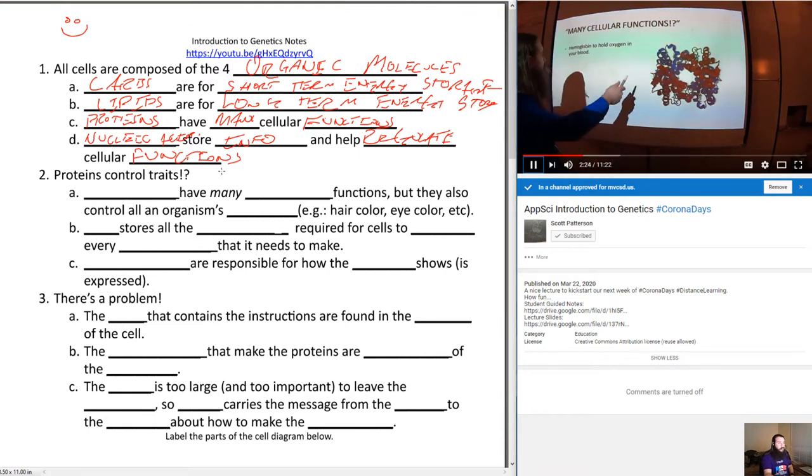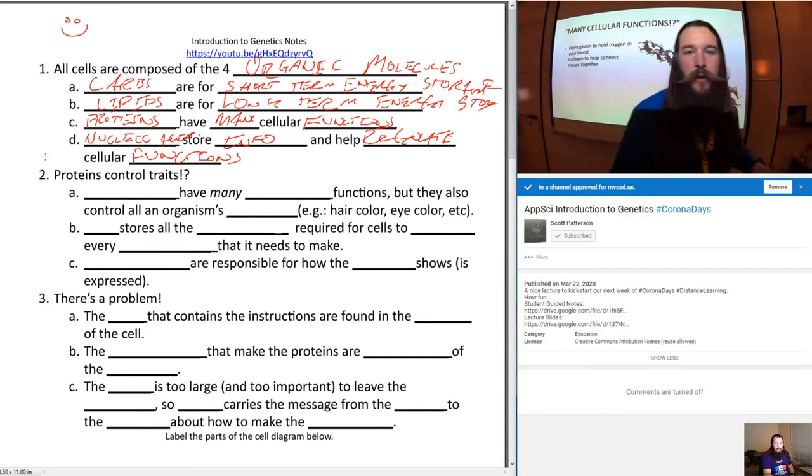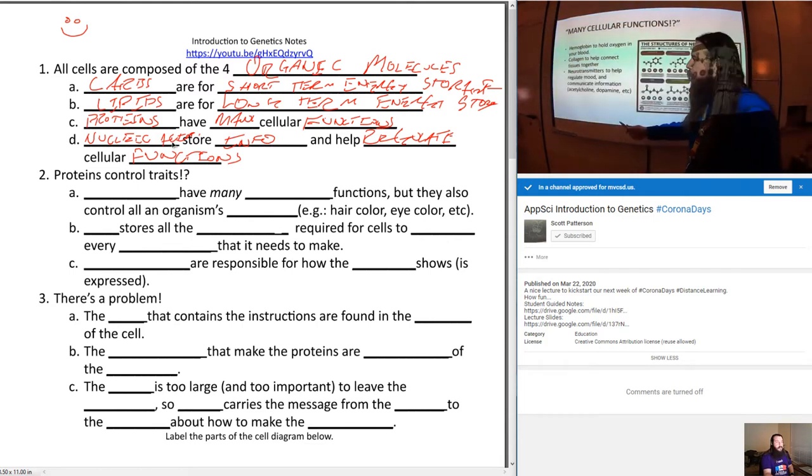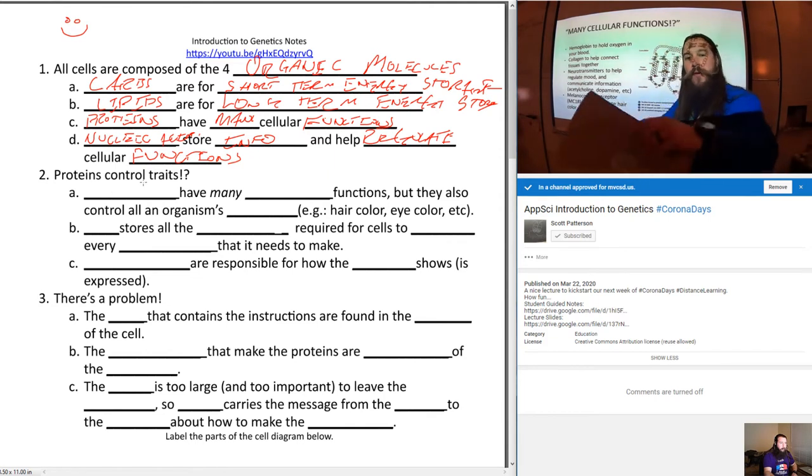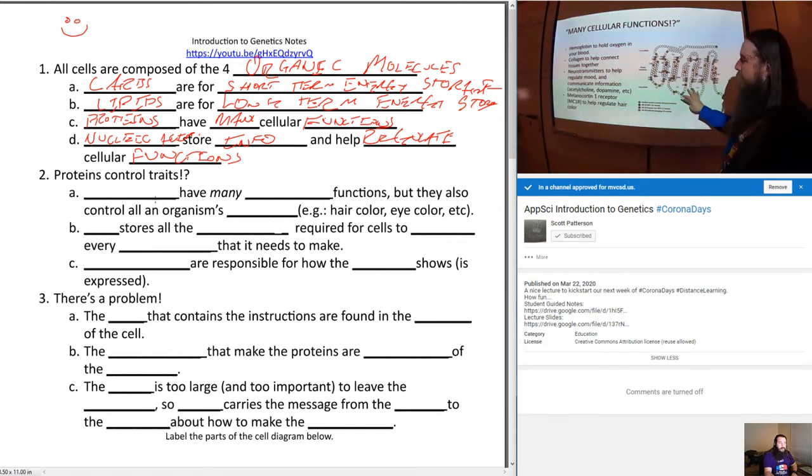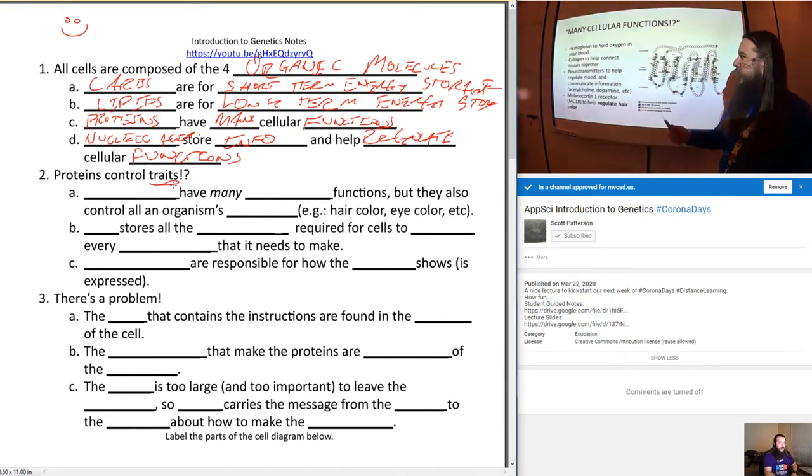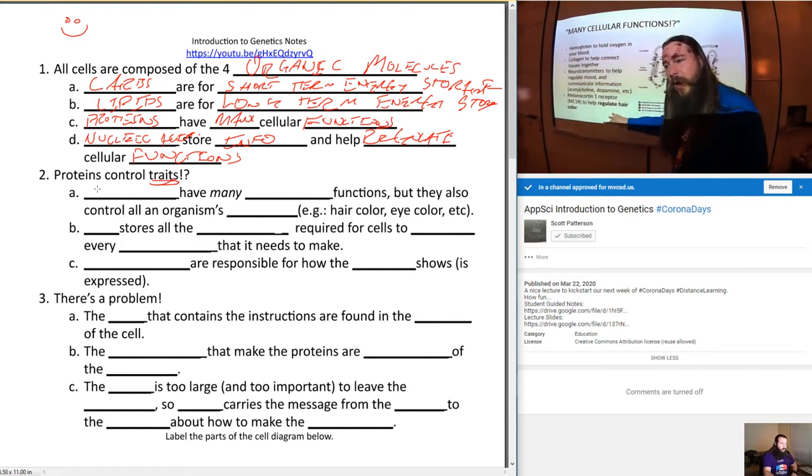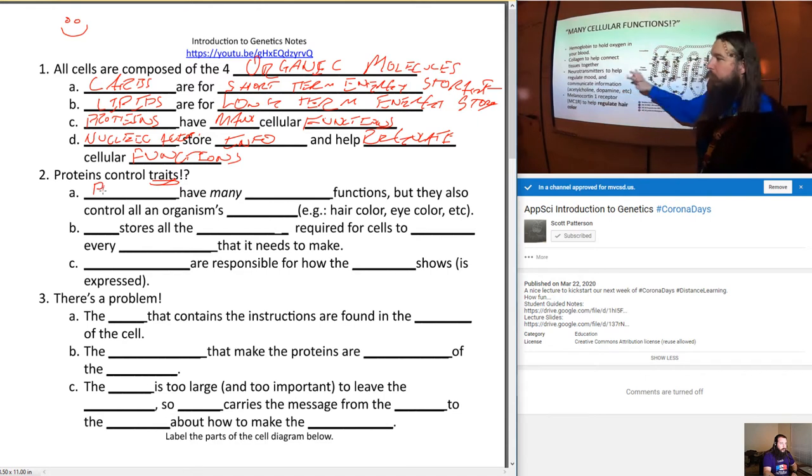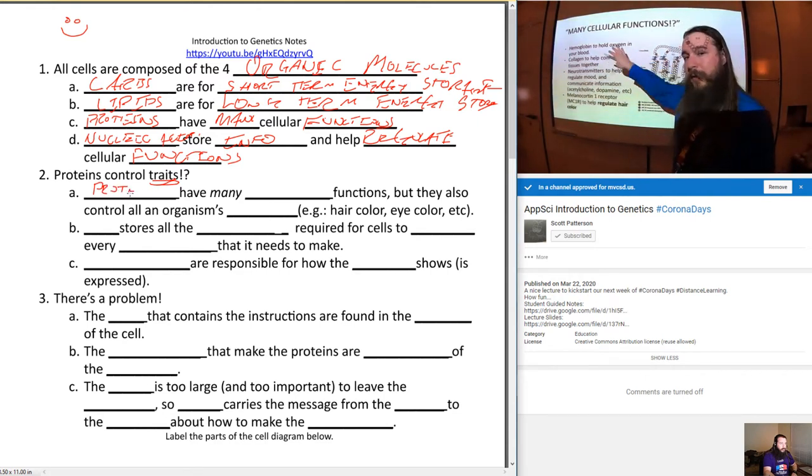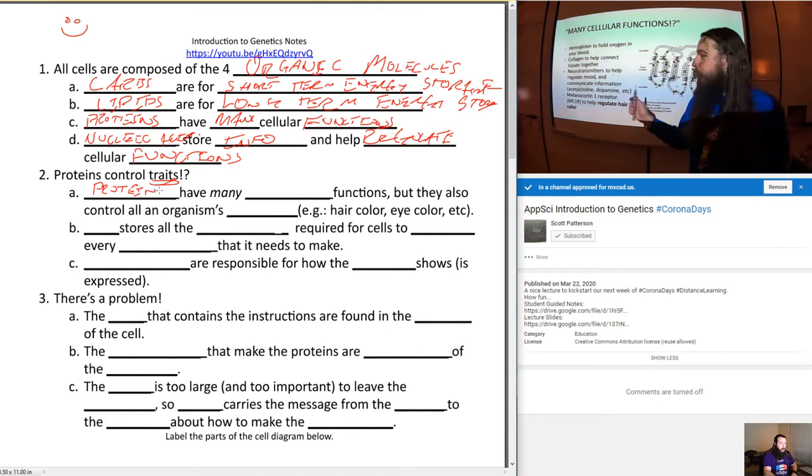I really want to focus here, since we're talking about genetics, on proteins. It said proteins have many cellular functions. Let's go ahead and list some functions. You got hemoglobin, which is good for holding the oxygen in your blood. You've also got collagen, which is a good connective material that helps hold the tissues together. You got neurotransmitters which can regulate the mood and communicate information, like acetylcholine and dopamine. We got the MC1R which have a cool activity for next year with the Rock Pocket Mouse, and that's actually control of regulating the hair color.